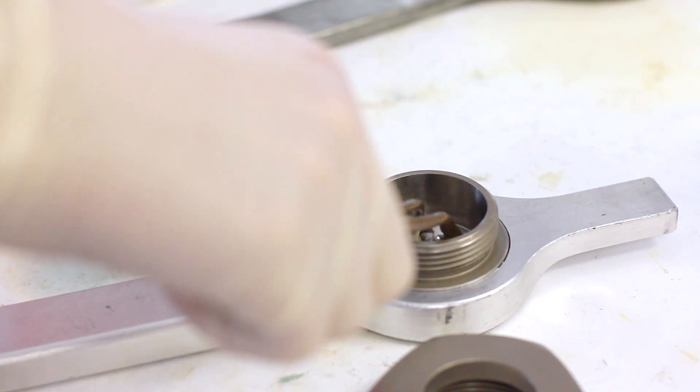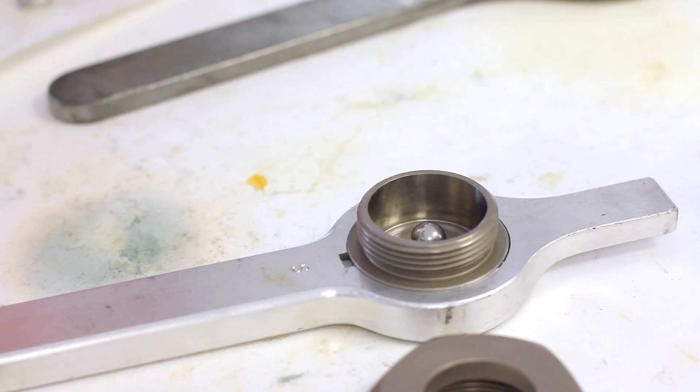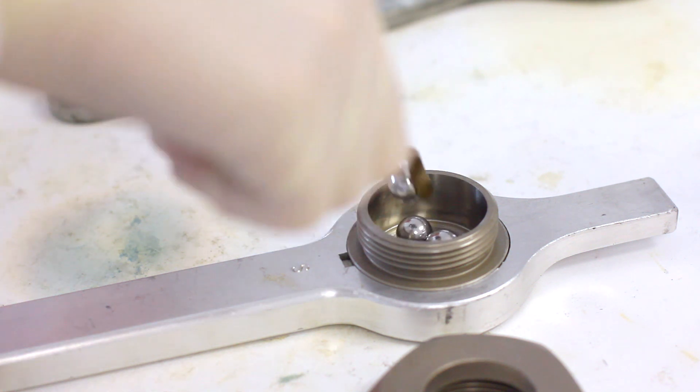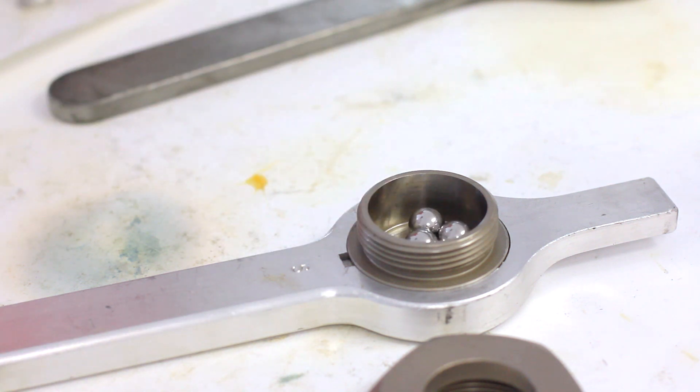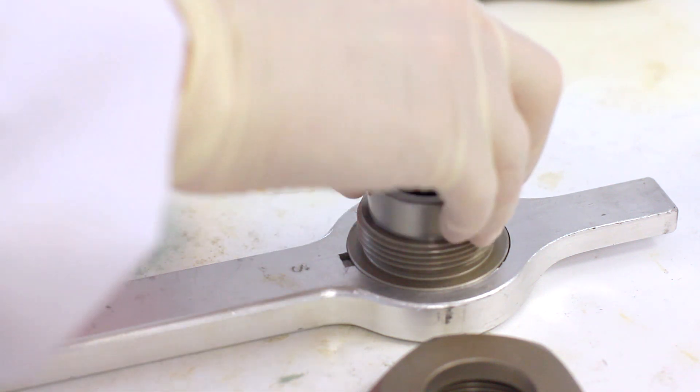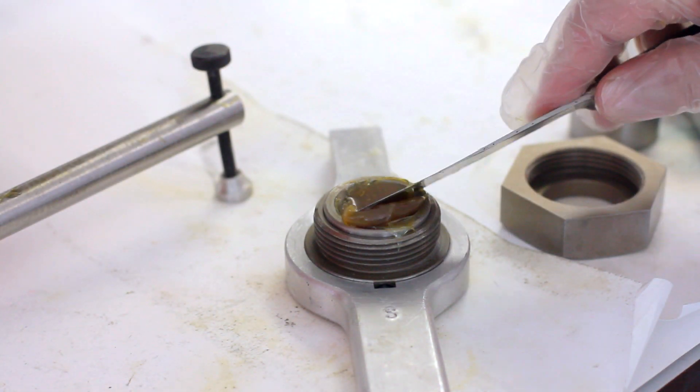At Rocol we pride ourselves on producing advanced products with industry needs at the core and have done for more than 130 years. This four ball test shows how our food lube universal grease can outperform an industrial multi-purpose grease.